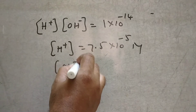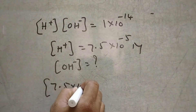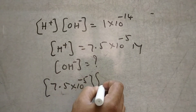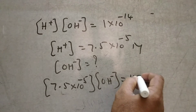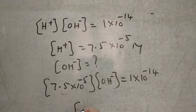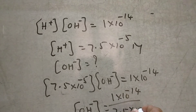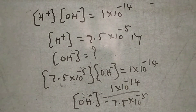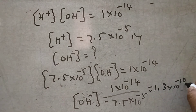So, substituting: 7.5 into 10 to the power of minus 5 — this is the H plus concentration — multiplied by the OH minus concentration equals 1 into 10 to the power of minus 14. Then, OH minus concentration equals 1 into 10 to the power of minus 14 divided by 7.5 into 10 to the power of minus 5. Finally, you will get the answer: OH minus concentration is 1.3 into 10 to the power of minus 10 M. This is the concentration of OH minus ions.